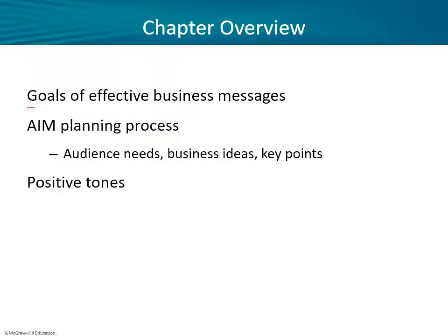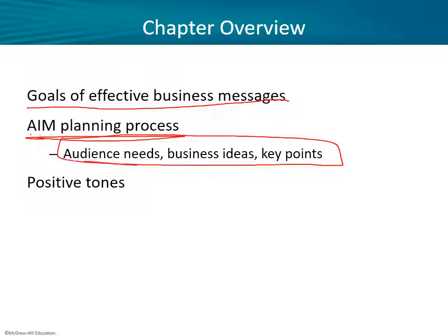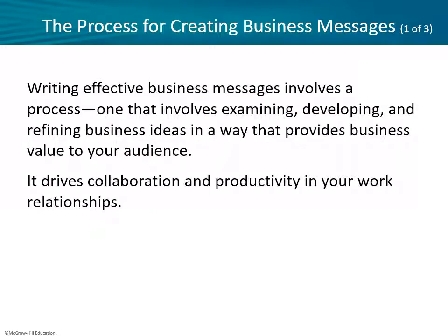Here's the overview of the chapter. We'll start by talking about the goals of an effective business message, then the AIM planning process — a very handy acronym: audience analysis, information gathering, and message development; or audience needs, business ideas, and key points. The author sets up the structure using flow charts, which is very handy. Then we'll talk more about positive tone, which might actually be the most critical thing of all — how do you strike just the right balance between enthusiasm and positivity without going overboard and sounding hyperbolic or silly.